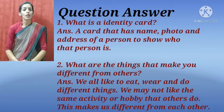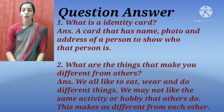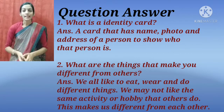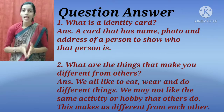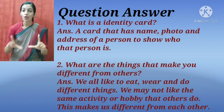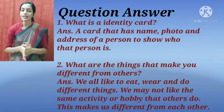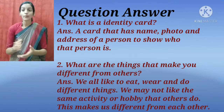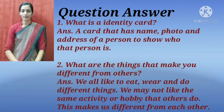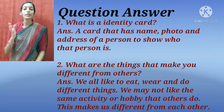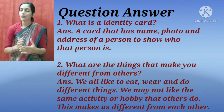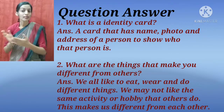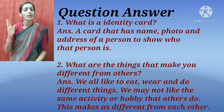Now we will revise some important questions. First, what is an identity card? The answer is: a card that has the name, photo and address of a person to show who that person is — it is called an identity card. Number 2, what are the things that make you different from others? We all like to eat, wear and do different things. We may not like the same activity or hobby that others do. This makes us different from others.